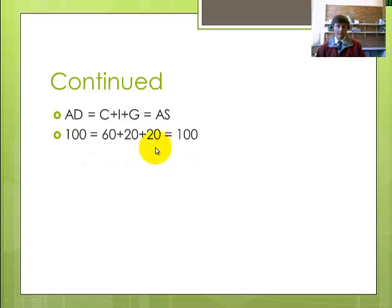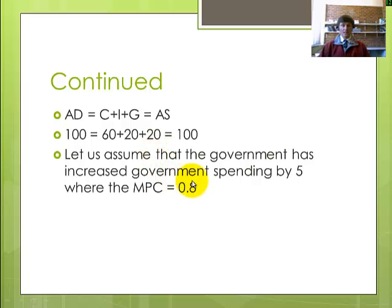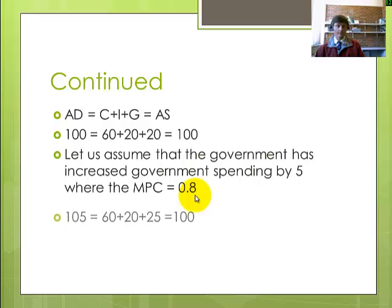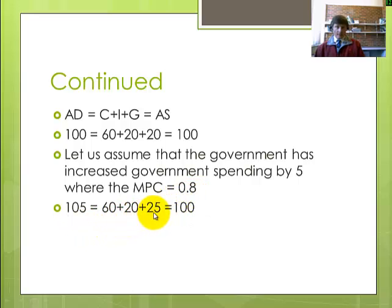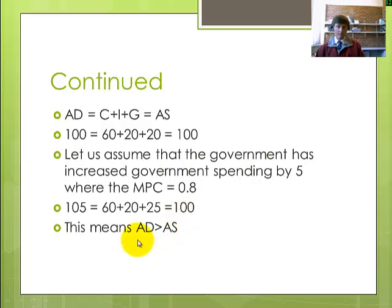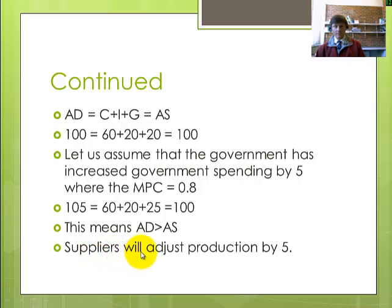Now let us assume that government has increased government spending by $5 billion, and the marginal propensity to consume is 0.8, so it means 80% of any extra income earned will be spent on consumption. That extra $5 billion is added on to government spending — previously it was 20, now it's 25 — which means that we have a disequilibrium where aggregate demand is 105 and aggregate supply is 100, so aggregate demand is bigger than aggregate supply. Through the stock adjustment principle and the production response, suppliers will adjust production by 5.